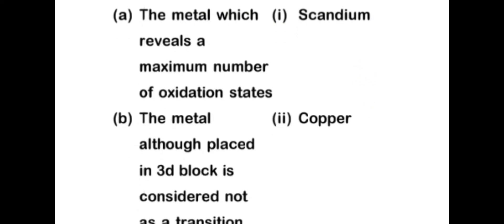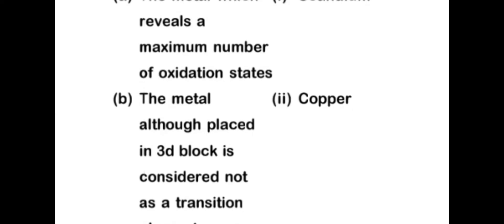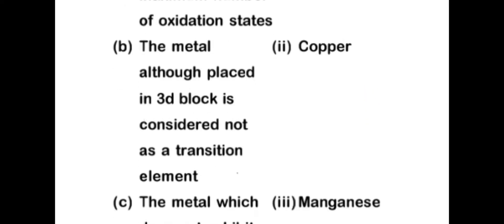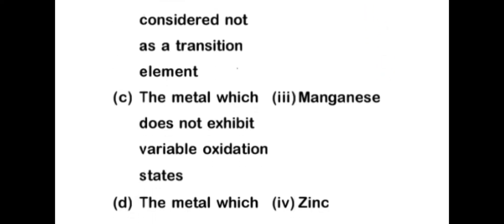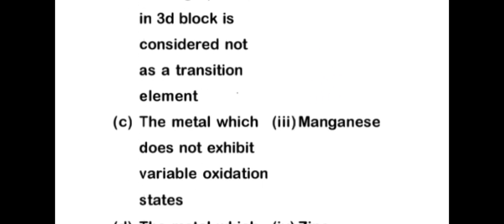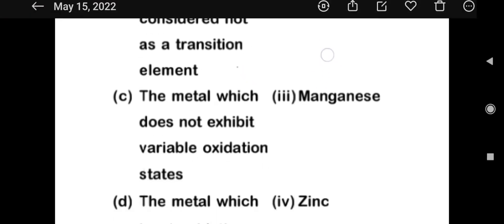Second question: the metal although placed in 3d block is considered not as a transition metal. It will be zinc. Zinc, cadmium, and mercury are situated in the d block but these elements are not considered as transition elements because they have completely filled d-orbitals.